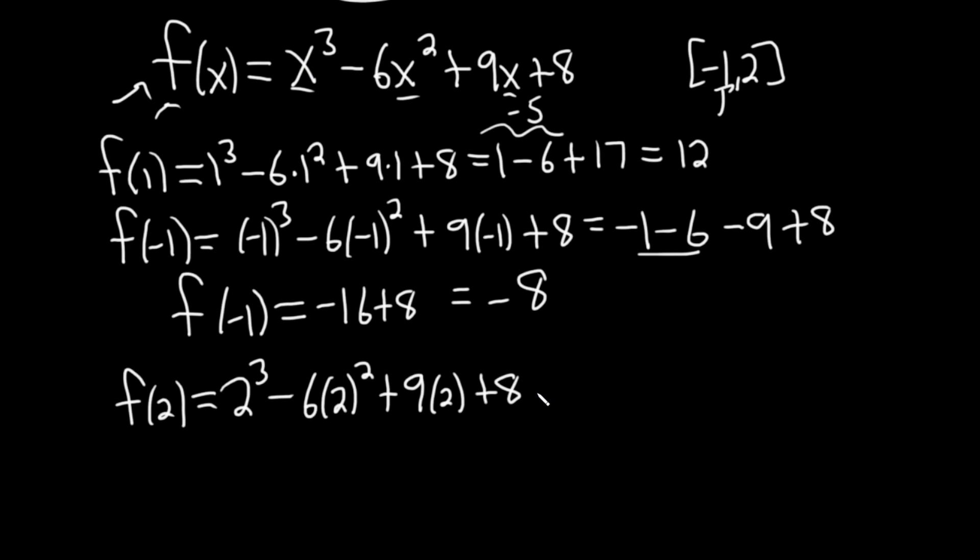So 2³ is 8 minus 6 times 4 (2² is 4), so this is -24. And 9 times 2 is 18, so plus 18, and then plus 8. So f(2) equals, let's see, 8 - 24 is -16, plus...